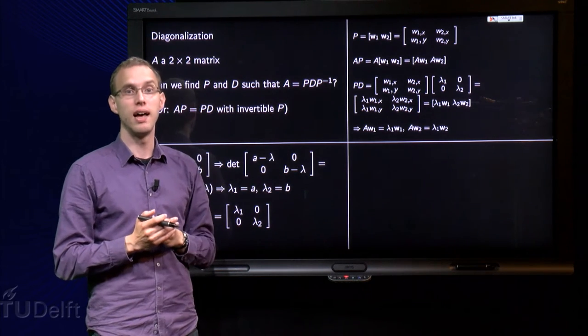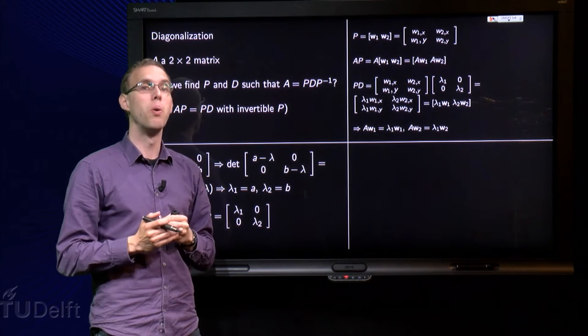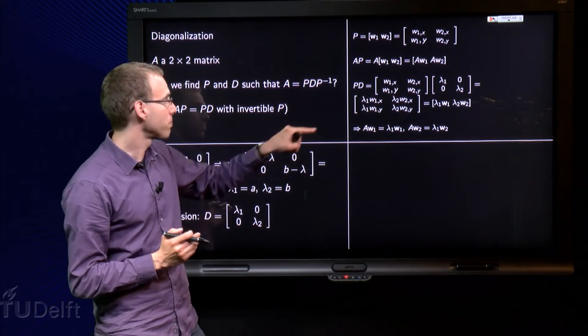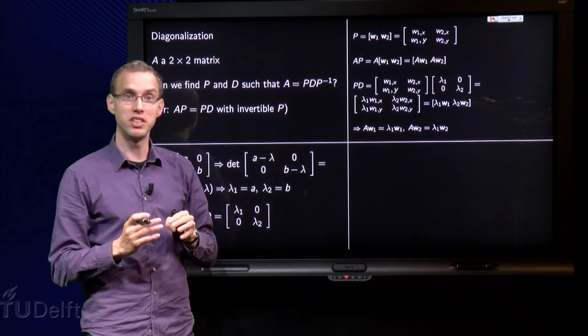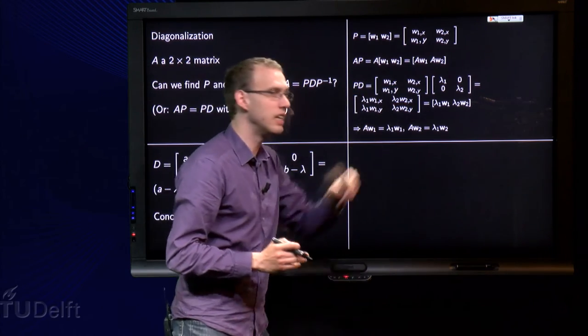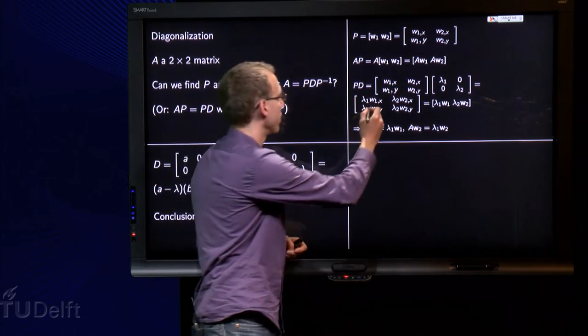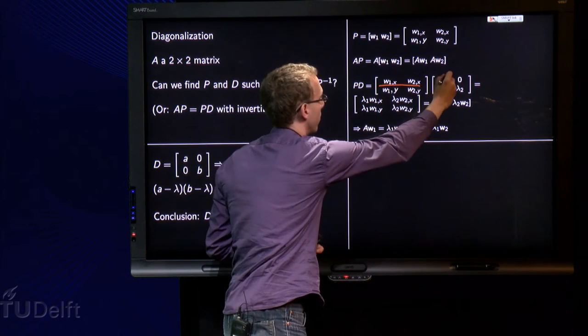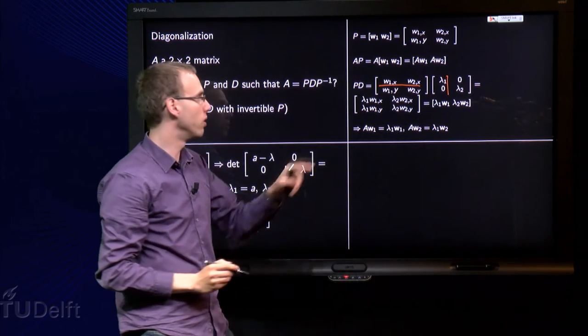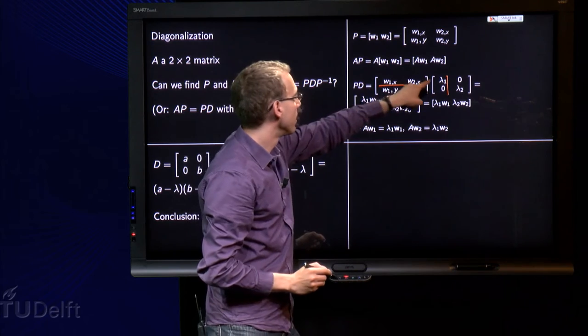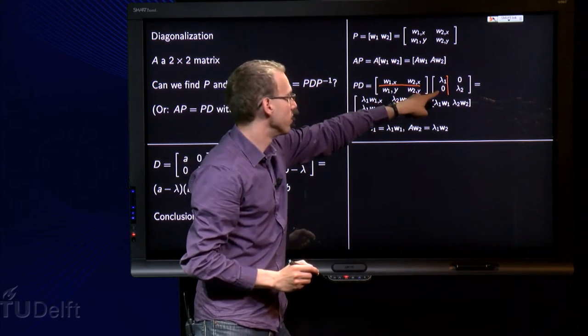But what about P times D? Well that is a kind of a mess. P times D, we just have to write down fully what P is and what D is, and then we compute the product using the row-column rule as usual.